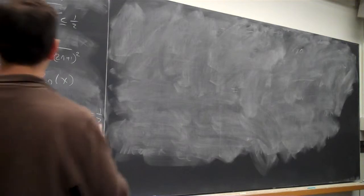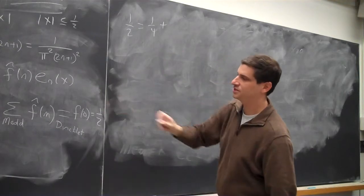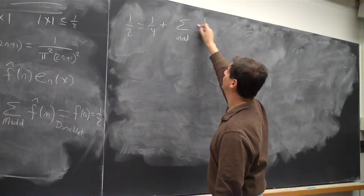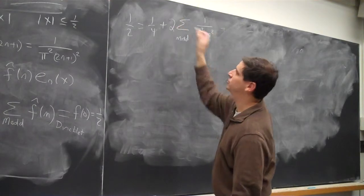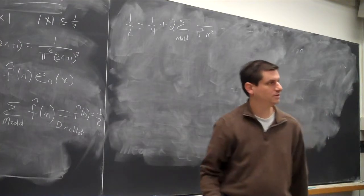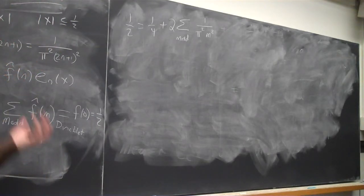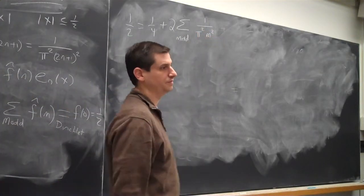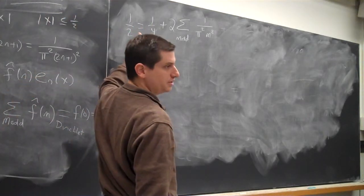All right, so now let's see what happens. So one half is one fourth plus, now the sum over m odd. I have one over pi squared m squared. And I'm going to put in a two. Why am I putting in a two? Yeah, so I'm initially going from minus infinity to infinity. The contribution at minus five is the same as the contribution of five. So let's just do it. m is an odd positive number.